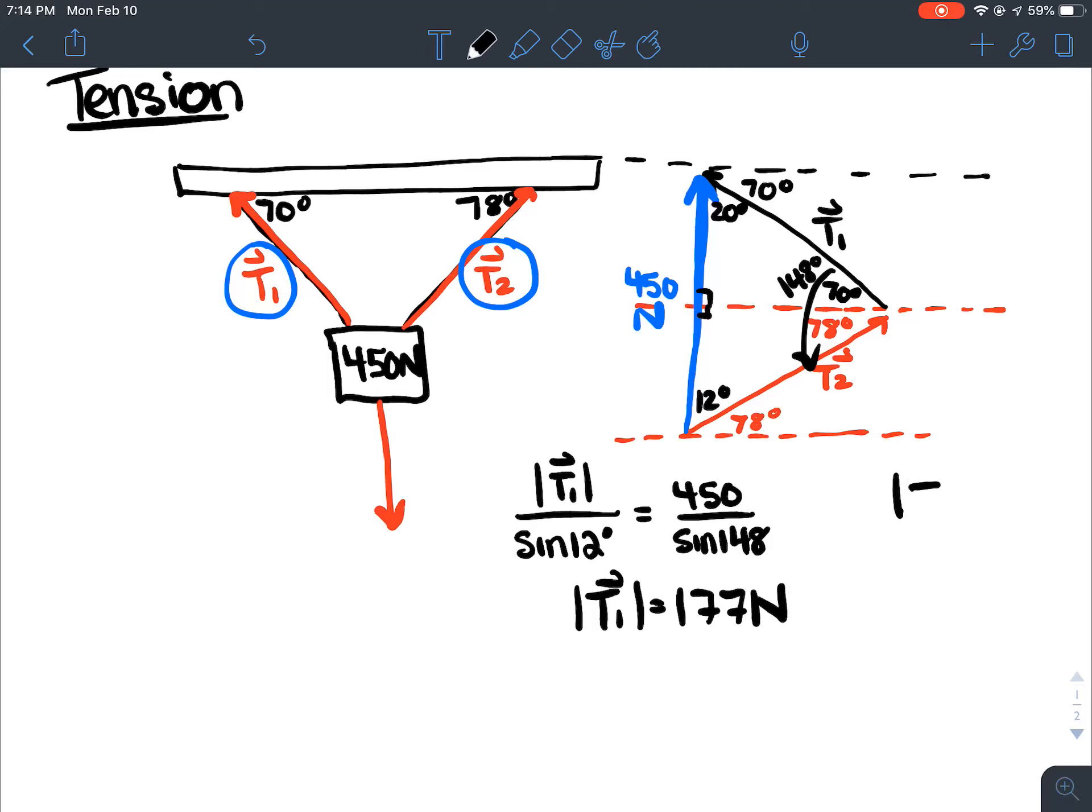And then for the other one, T2, will be over sine 20. And then I'll have the same ratio over here, sine 148. Okay, so that will be 450 divided by sine 148 times sine 20. Okay, that'll be T2's magnitude will be 290 newtons.